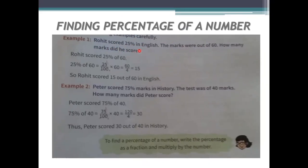In the English test he got 25 percent, but the actual marks are not given — just the percentage, and the test is out of 60. So we have to find how many marks he scored. Rohit scored 25 percent of 60, which means 25 by 100 times 60. That gives 60 by 4, which equals 15. So Rohit scored 15 out of 60 in English.